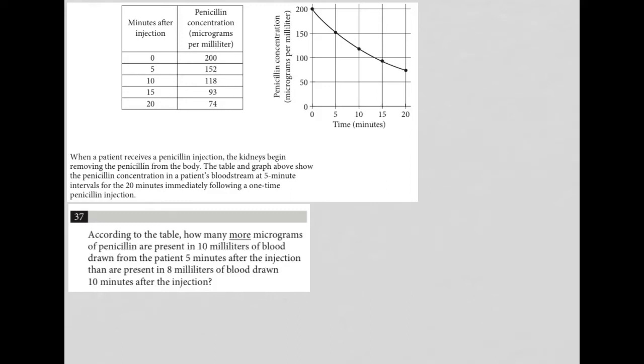This question is a diagram question. I call any question that provides visual input a diagram question. So we're given a table and we're given a graph. When we look at the information provided in the table, we see that the column here is minutes after injection and the column here is penicillin concentration in micrograms per milliliter.